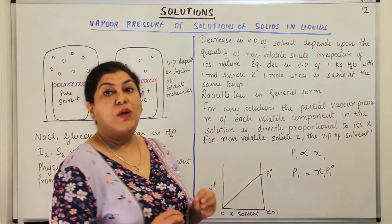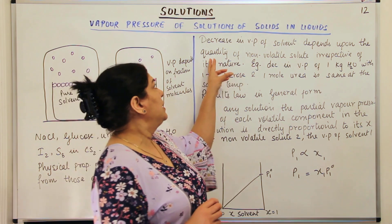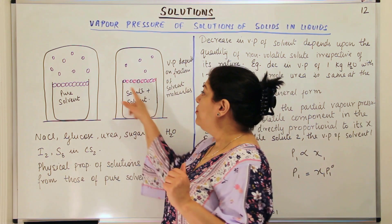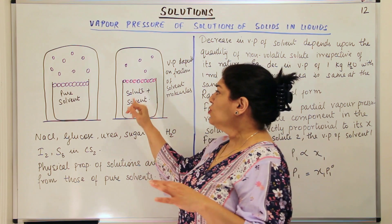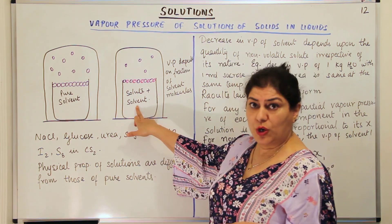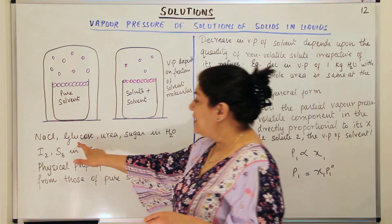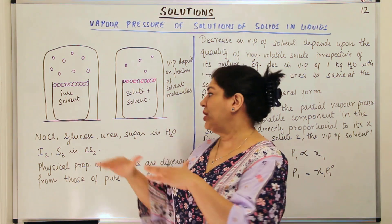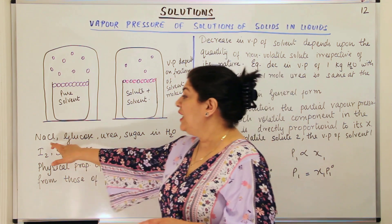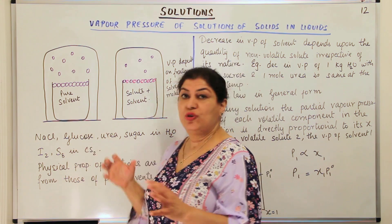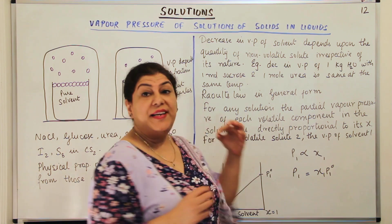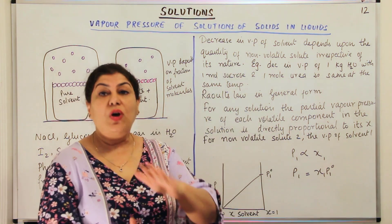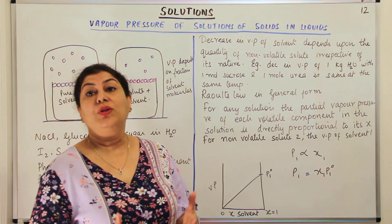The decrease in vapor pressure of the solvent depends entirely on the quantity of the non-volatile solute, and not on the quality — that is, the nature — of the non-volatile solute. For example, if I have one mole of solvent and take one mole of sodium chloride, or one mole of glucose, or one mole of sugar, the depression in vapor pressure in all cases will be the same, irrespective of the nature of the solute. The decrease in vapor pressure depends only on the quantity of the solute, not its nature.